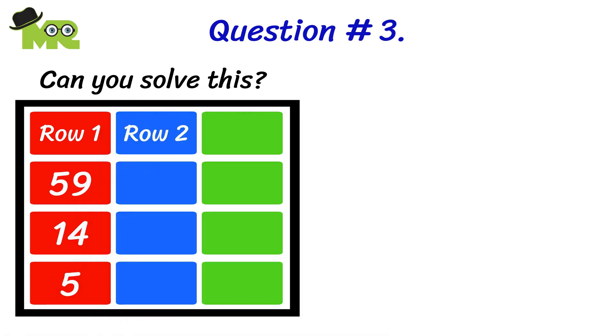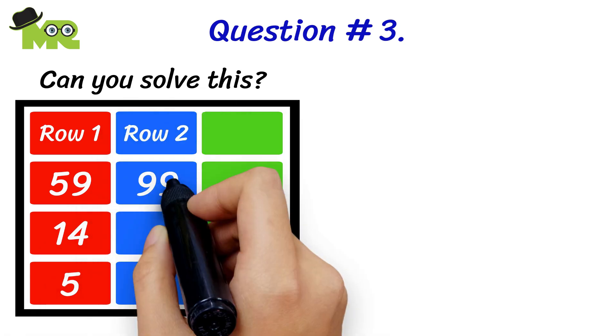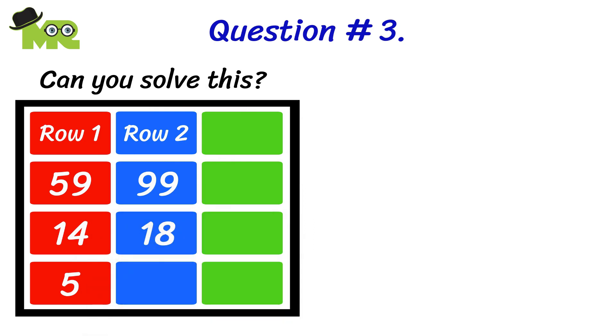In row two, the first box has the number 99, the second box has 18, and the third box has the number 9.